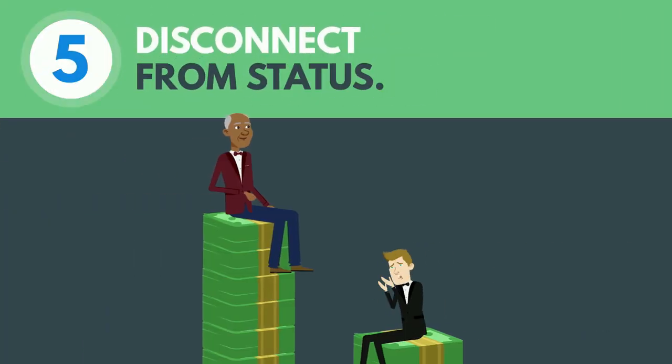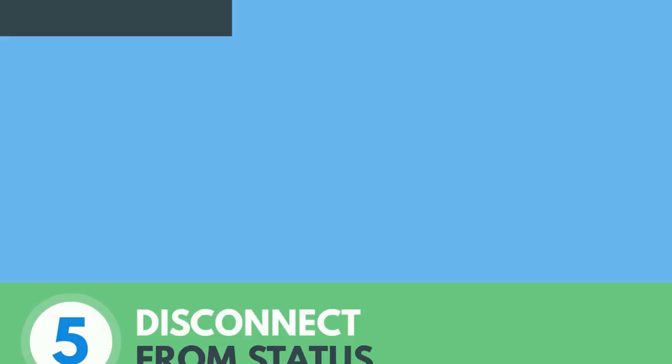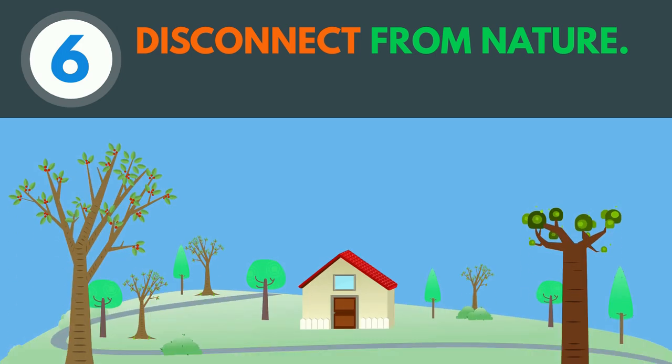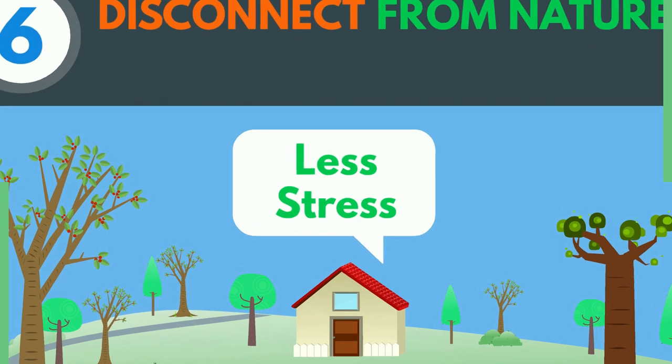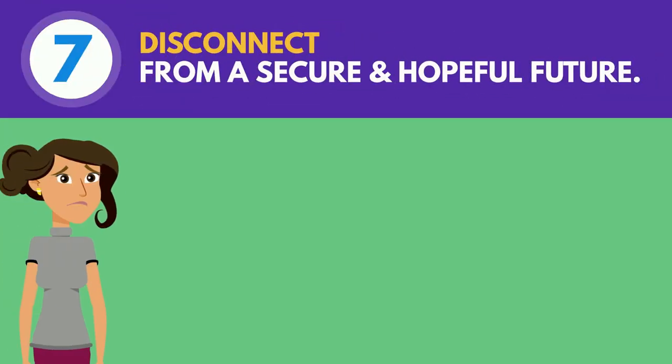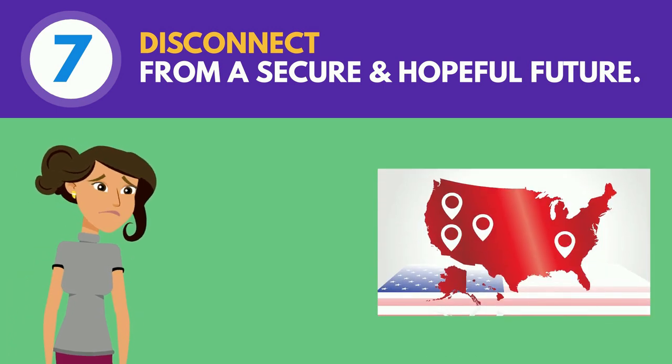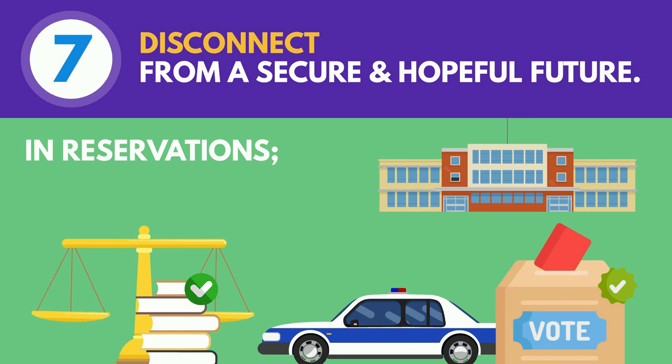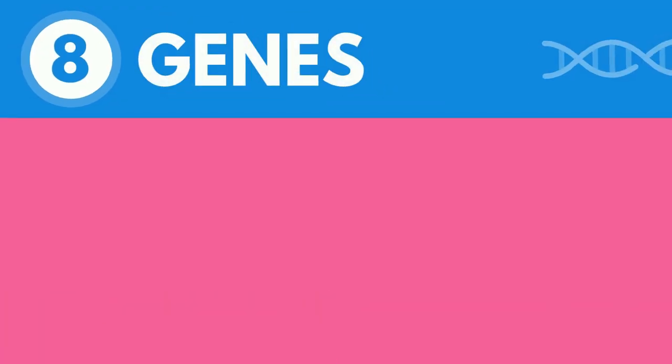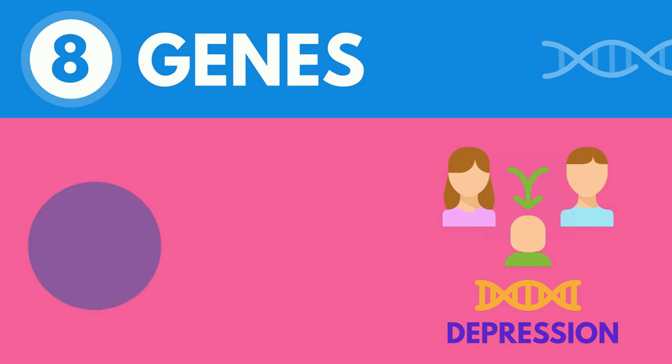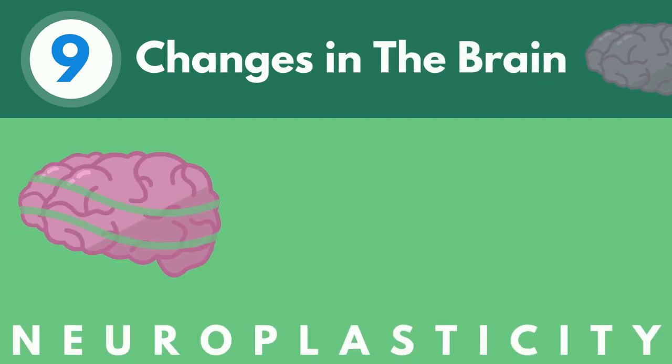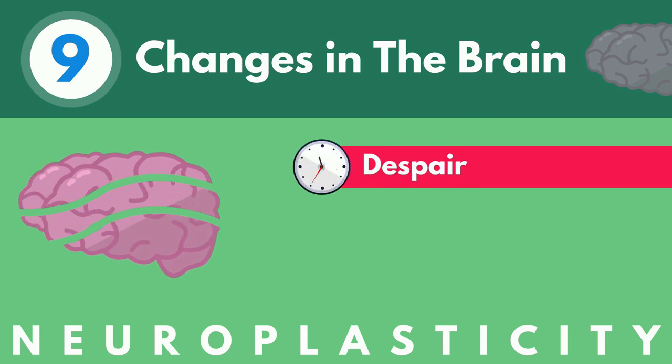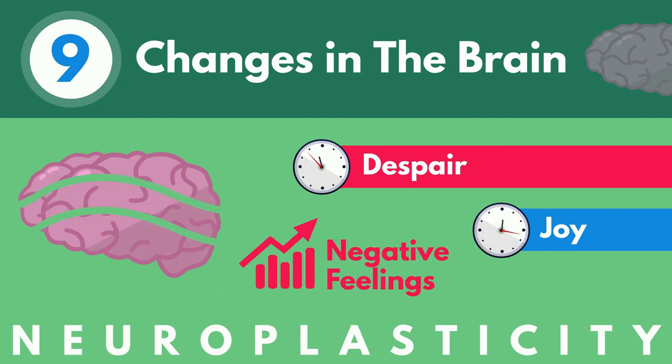Six: Disconnect from nature. People who live in greener neighborhoods feel less stressed and despair than those who don't. Seven: Disconnect from a secure and hopeful future. Native Americans on government-controlled reservations had staggeringly high suicide rates. In reservations where they had control of their own laws, elections, police, and schools, this was not a problem. They had control over their destiny and were less likely to commit suicide. Eight: Genes. We do know that there is a genetic influence in depression, though it only accounts for 37% of cases. And nine: Changes in the brain. Neuroplasticity is how the brain changes from experience. Because of this, when people spend more time with thoughts of despair rather than joy, it can strengthen the negative feeling areas.